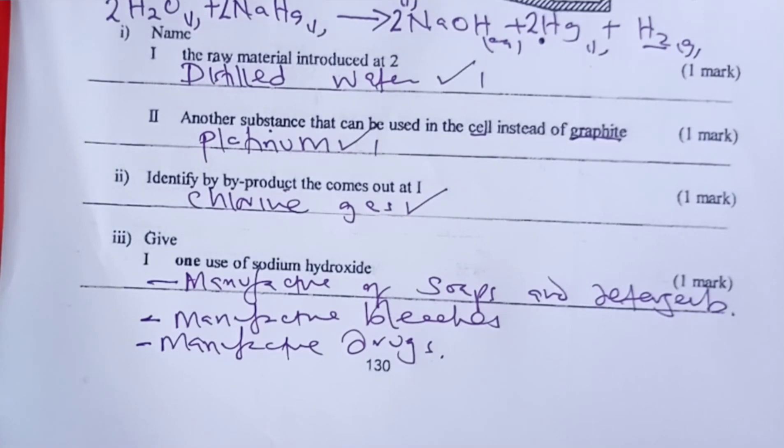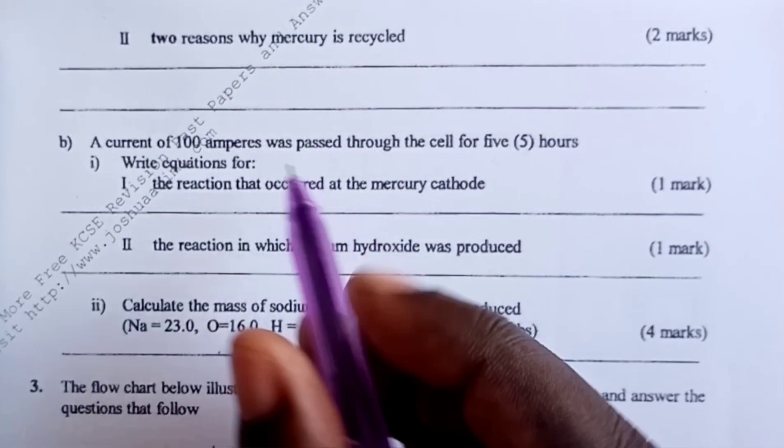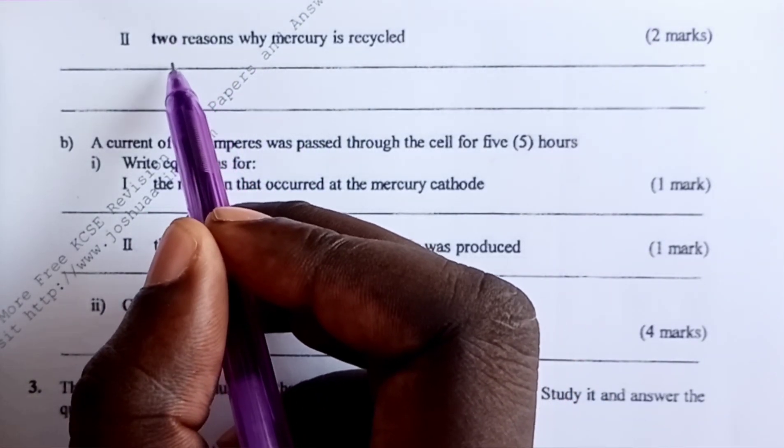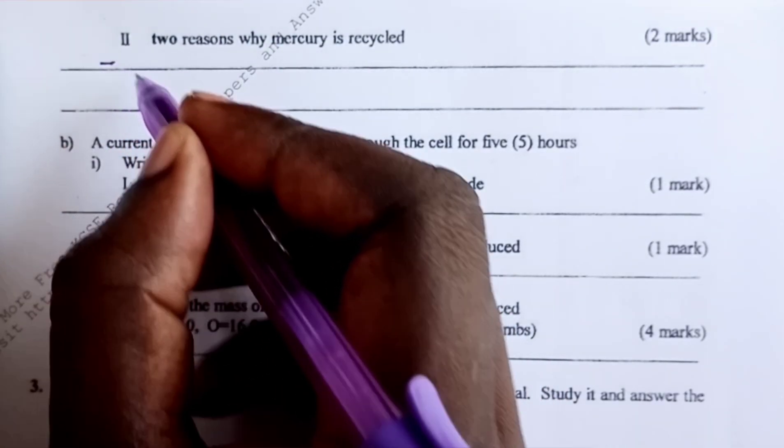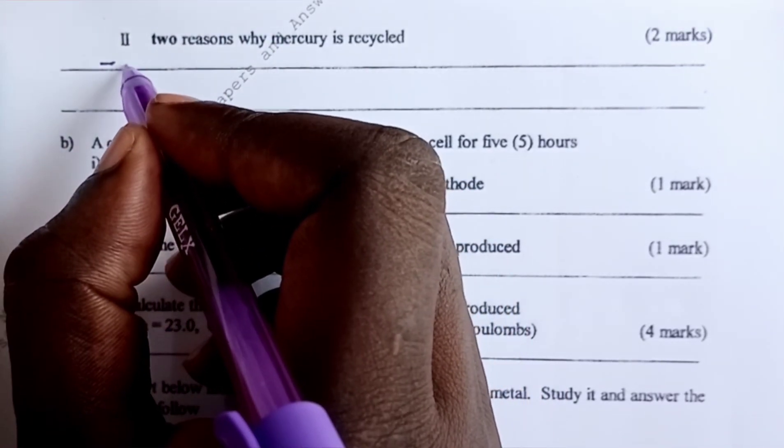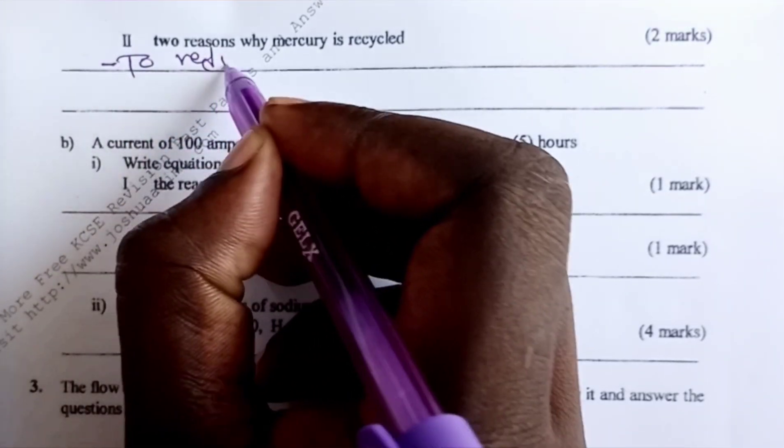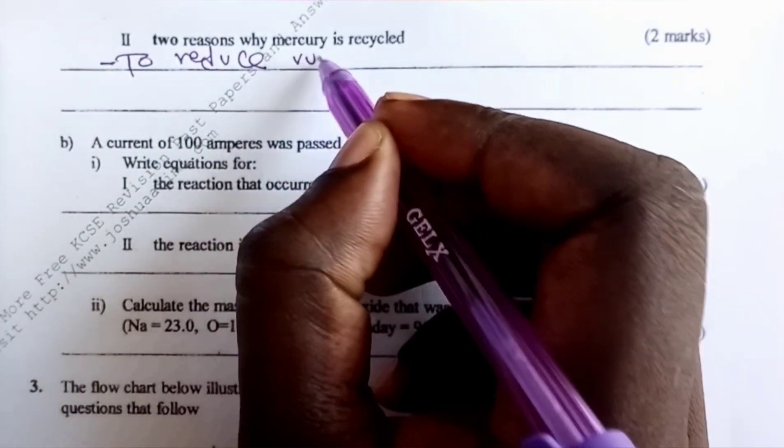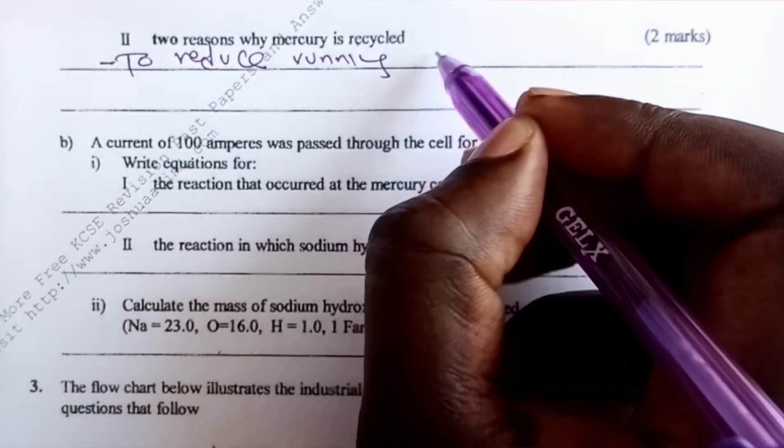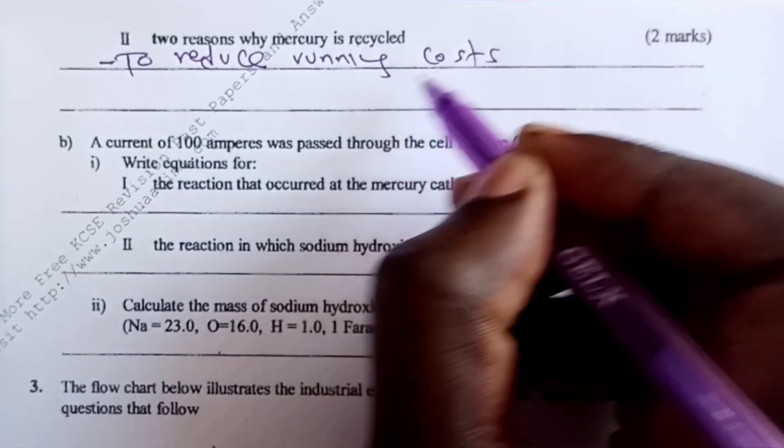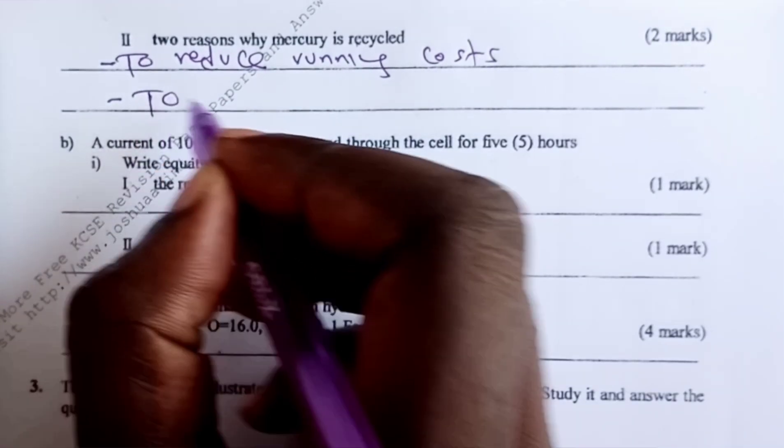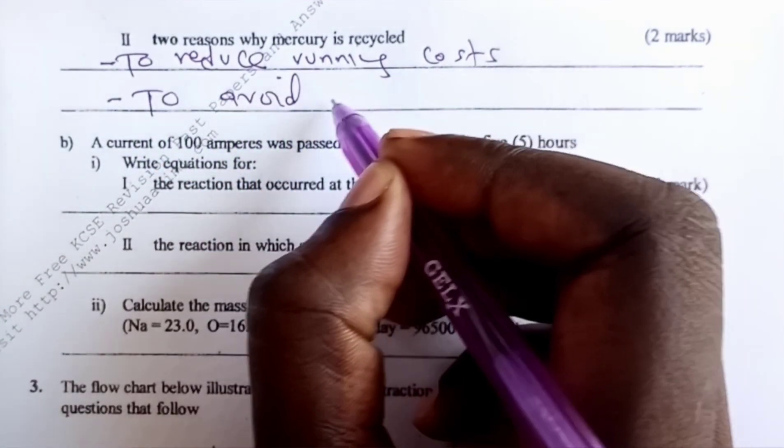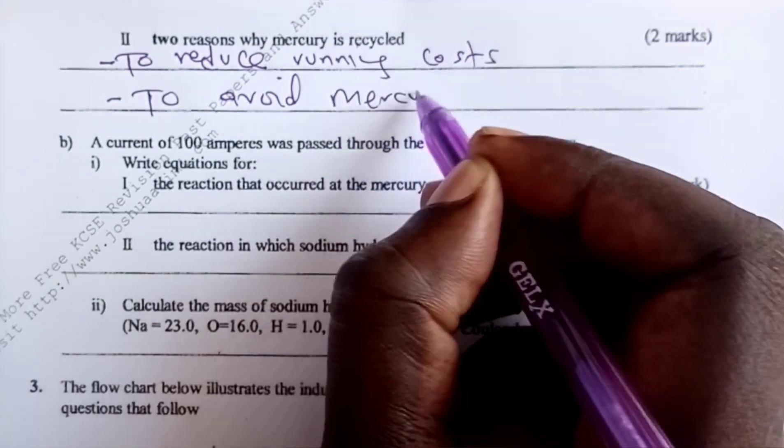We move on to the next question, which is asking the student to give two reasons why mercury is recycled. We recycle mercury to reduce running costs. Remember we have just said that mercury is very expensive. The second reason is to avoid mercury poisoning.